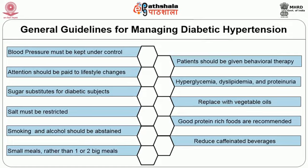Saturated fats such as animal fats like butter, lard, egg yolk, and other foods high in cholesterol have to be reduced to a minimum and can be replaced by vegetable oils. Salt must be restricted to the recommended level. Good quality protein-rich foods are recommended like lean meat, fish, and chicken. Cigarette smoking and alcohol should be abstained. Caffeinated beverages such as tea and coffee have to be restricted or taken in moderation. Small meals should be spaced over the day rather than taking one or two big meals, which helps avoid postprandial peaks in blood sugar.